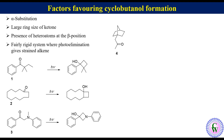Compound 4. Upon irradiation it will produce a 1,4-diradical. If there is photo-elimination, it will produce a strained alkene which violates Bredt's rule, so alkene formation is restricted. Thus cyclization will be favored and give rise to a tricyclic alcohol.